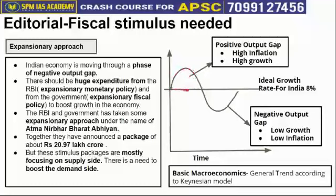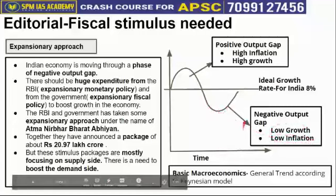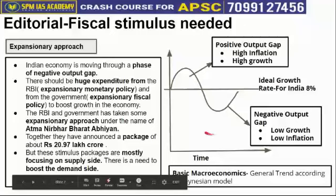The ideal phase is the one in the middle. The other phase — which is very bad — is called the recessionary phase or negative output gap phase. In this phase, growth rate is low and inflation is also low. Currently, the Indian economy is not even in this phase — it is in the negative zone, with growth rate at minus 23.9% in the first quarter.